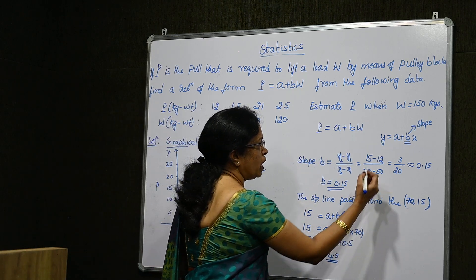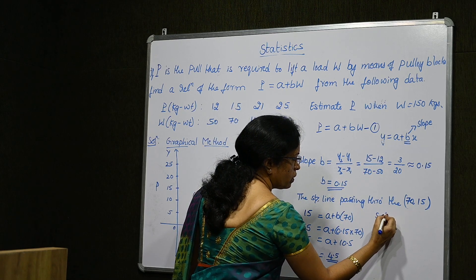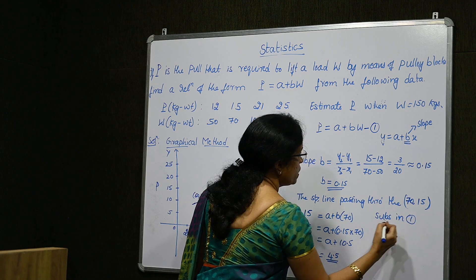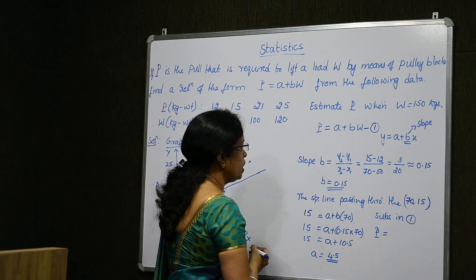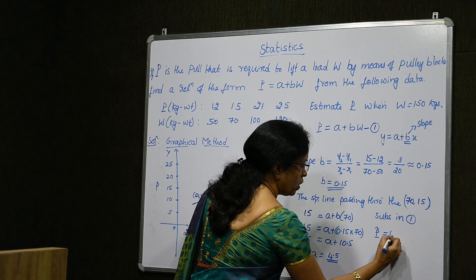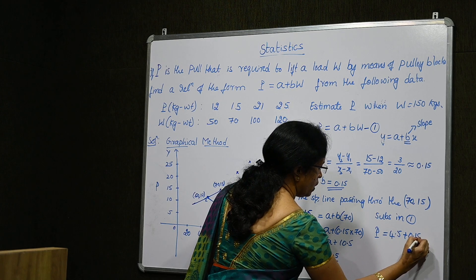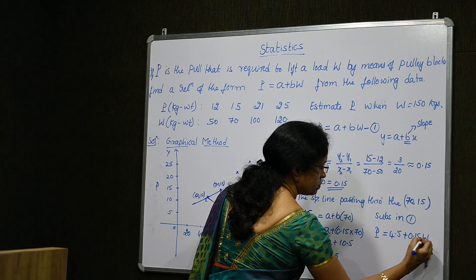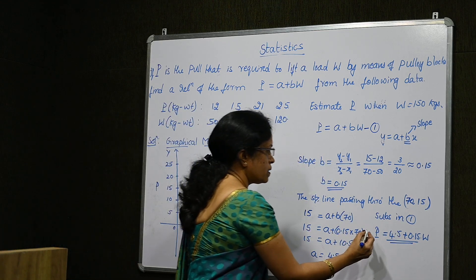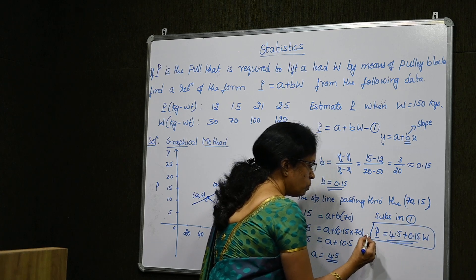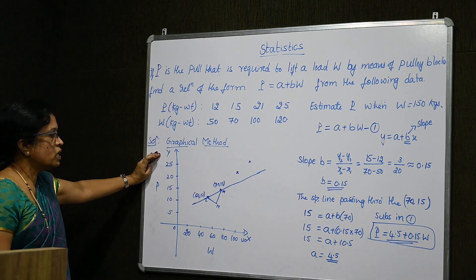This is how we find the values of parameters A and B using the graphical method. Substituting these values in equation 1, we get the curve of best fit by graphical method: P is equal to 4.5 plus 0.15 into W. This represents the relationship between P and W.